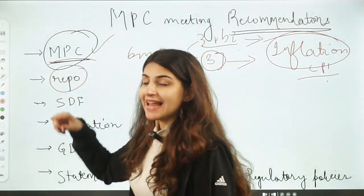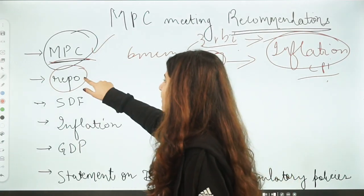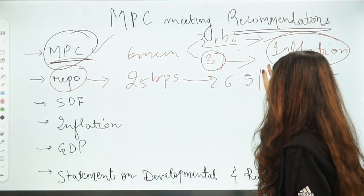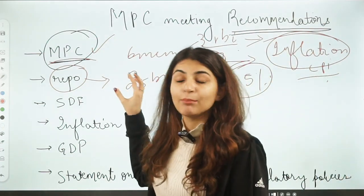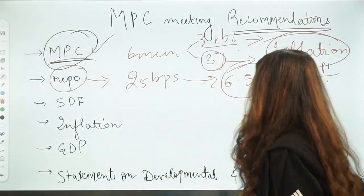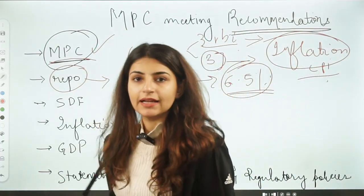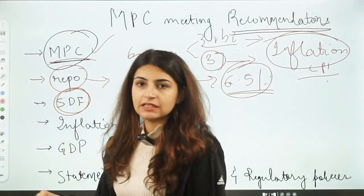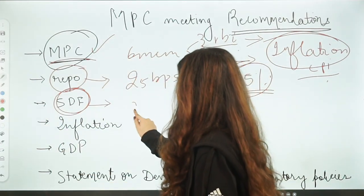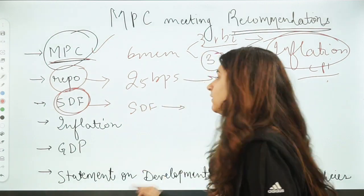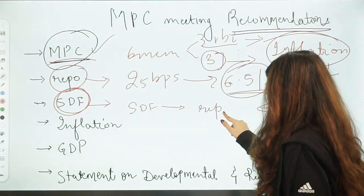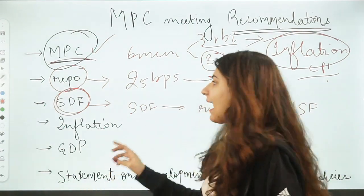This time, the Monetary Policy Committee meeting has increased the repo rate by 25 basis points. It now stands at 6.5%, effective immediately after this meeting. Talking about the Standing Deposit Facility — the SDF forms the floor rate of the liquidity corridor, also called the liquidity adjustment framework. The MSF, marginal standing facility, forms the ceiling rate, and the repo rate sits in this region. The SDF and MSF adjust accordingly as per the repo rate.